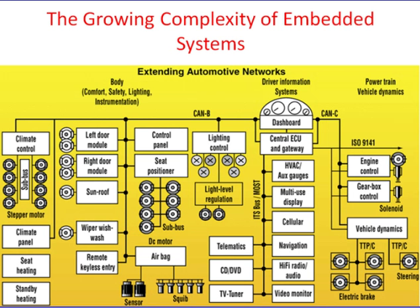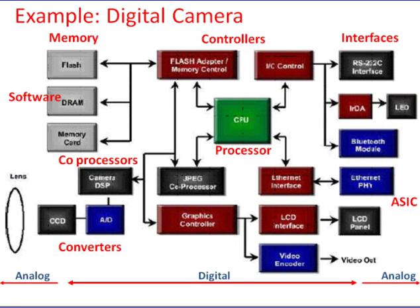Embedded systems are growing in complexity. For example, in automotive electronics, the chassis system has many subsystems which monitor various parameters and are actively controlled: ABS (anti-braking system), TCS (traction control system), EBD (electronic brake distribution), and ESP (electronic stability program).